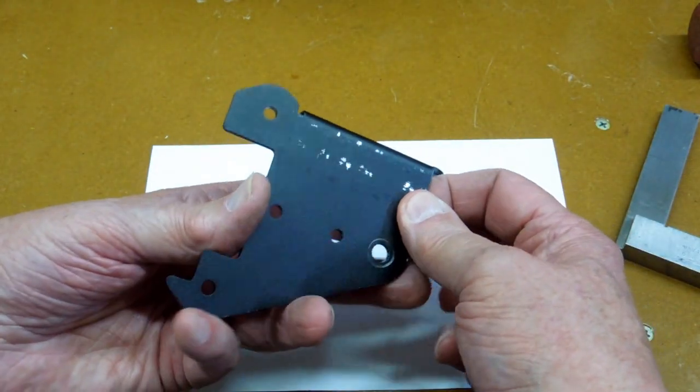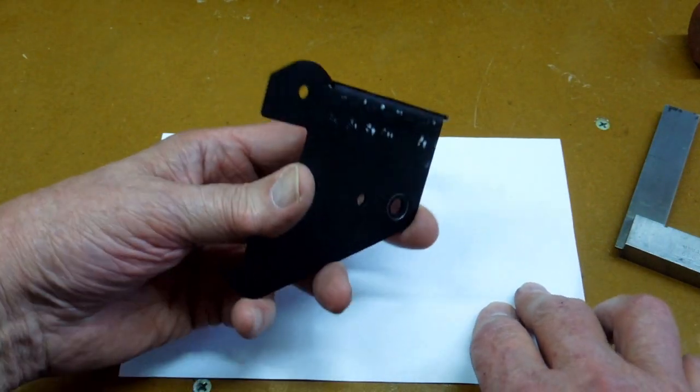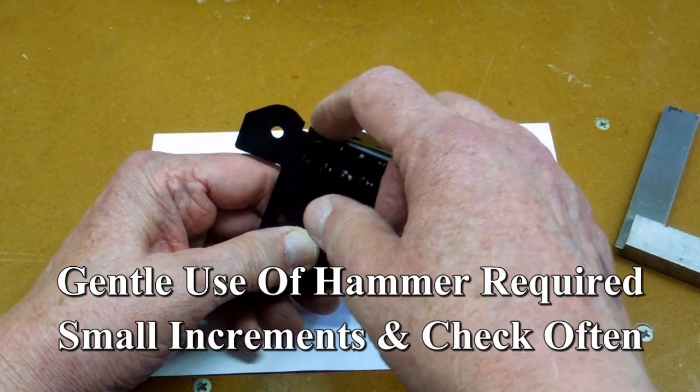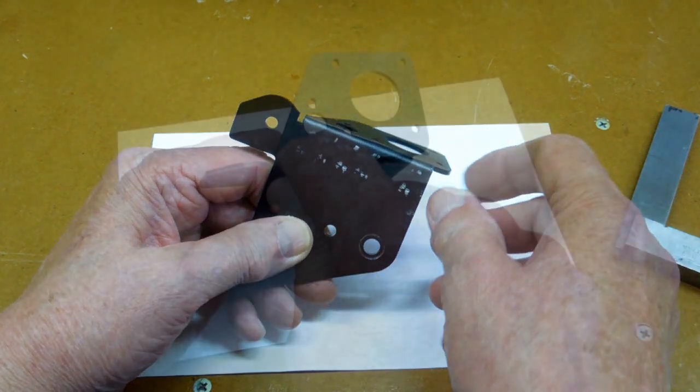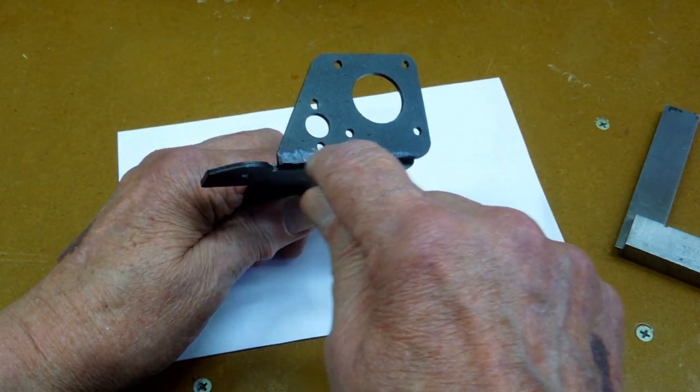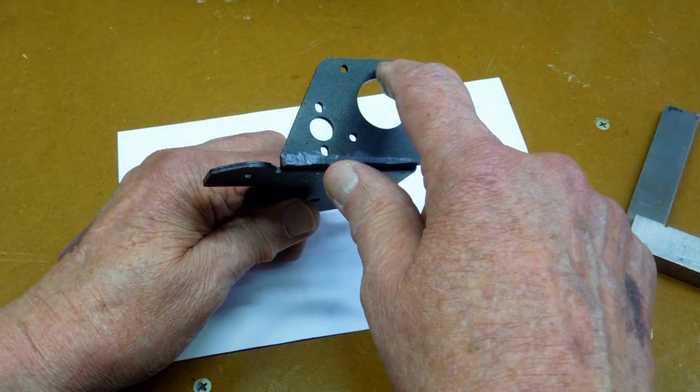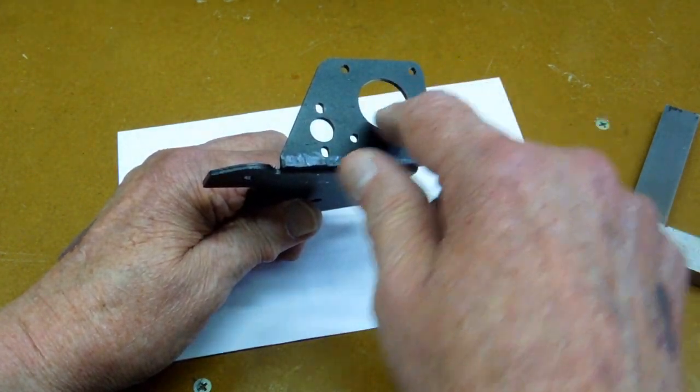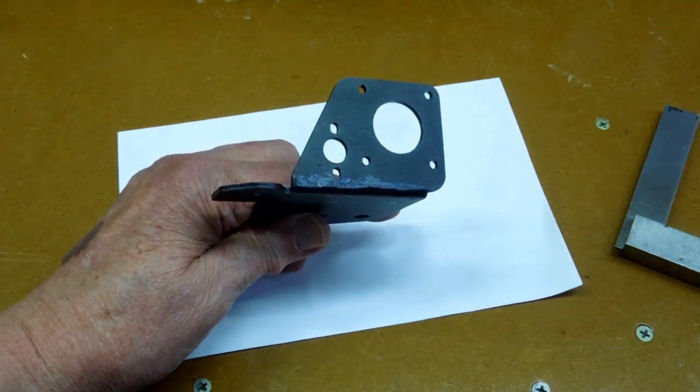Going to the bench vise, which I failed to get on camera, I clamped this up and slowly dressed this down. You have to be sure and try to hit here. You don't want to hit out here. If you hit out here, straight away it will bend through all these holes. This is a relatively soft piece of metal.